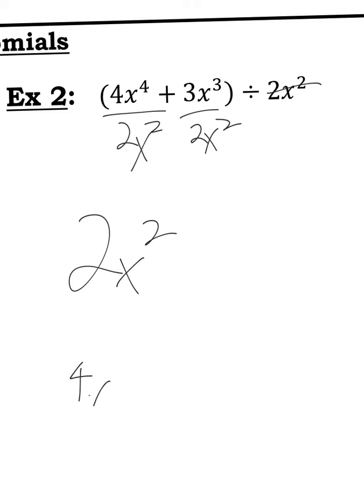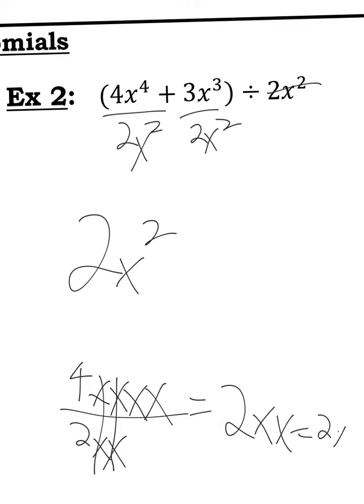Again, if I wanted to write 4x to the 4th, I could write it like this. And I could write 2x squared like this. And so you'd see that the 2x would cancel out and you'd know 4 divided by 2 is 2. So you'd get 2xx, which is 2x squared, which is what I just wrote down. Just another way of teaching it to you, really. What's 3 divided by 2? That's 1.5 or it just stays a fraction. So I'm going to keep it as a fraction, 3 over 2. So what's x to the 3rd divided by x squared? Well, what's 3 minus 2? That's 1. So I just have 1x left over. That's the final answer.